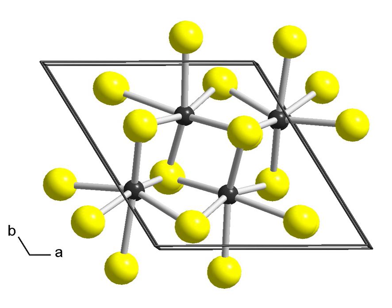While most other layered dichalcogenides have a high symmetry, ReS2 has a very low triclinic symmetry, and this symmetry does not change from the bulk to monolayers.